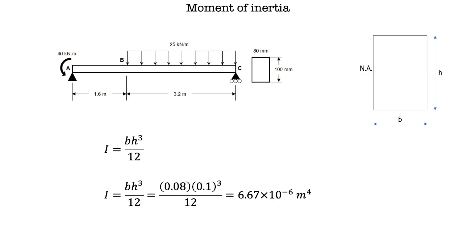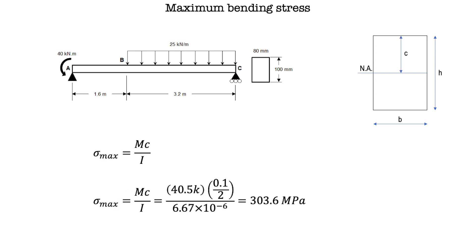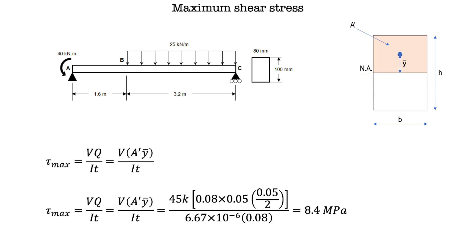After that, we calculate the area moment of inertia of the rectangular cross-section beam using I equals BH³ over 12. We then use that value to calculate the maximum normal stress due to bending, which is 303.6 MPa. Finally, we substitute all values into the formula for maximum shear stress and get tau max equal to 8.4 MPa.